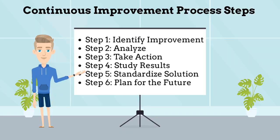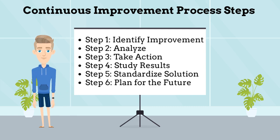There are six steps associated with the continuous improvement process. Step 1 – Identify Improvement Opportunity: Select the appropriate process for improvement, evaluate the process, and select a challenge or problem. Step 2 – Analyze: Identify and verify the root cause. Step 3 – Take Action: Plan and implement actions that correct the root cause.